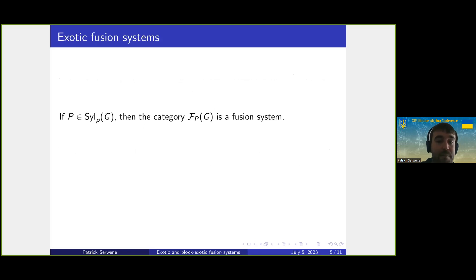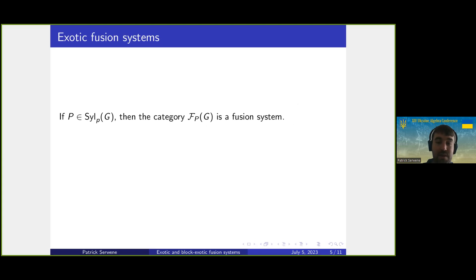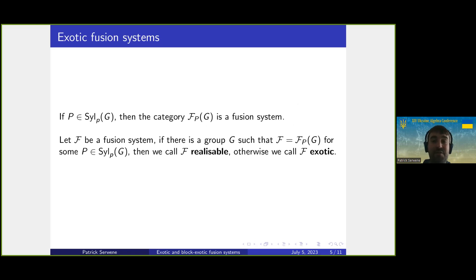So what are exotic fusion systems? The fusion category F_P(G) for a finite group G with a Sylow p-subgroup P always is a fusion system. But not every fusion system needs to be of this form. If we can find a group G such that F equals F_P(G) for some Sylow p-subgroup P of G, we call F realizable. If we cannot find such a group, we call F exotic.